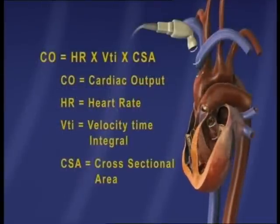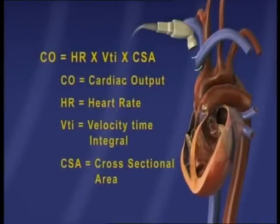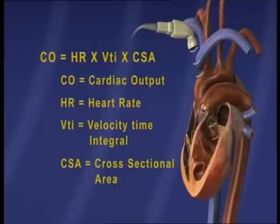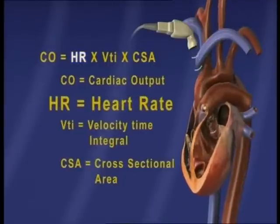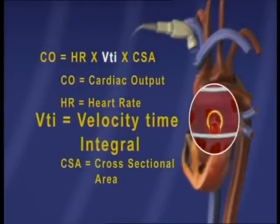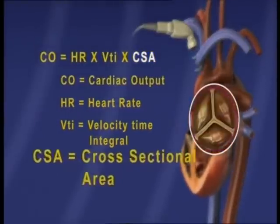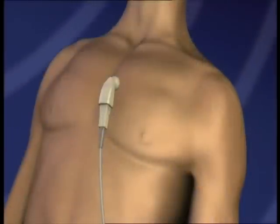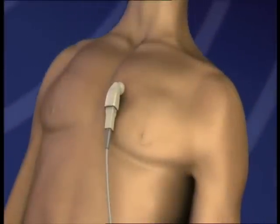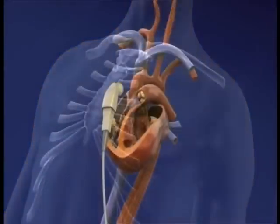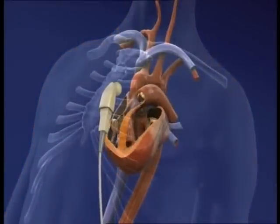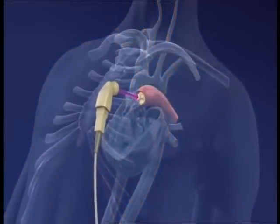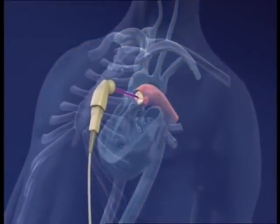Aortic cardiac output is determined using heart rate, VTI, and valve cross-sectional area. Pulmonary cardiac output is evaluated the same way via the pulmonary valve using a parasternal approach.